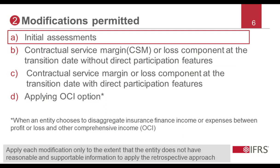The modifications specified in IFRS 17 provide relief from having past information needed to apply the full retrospective approach. That is, firstly, the assessments an entity would normally make at the date of inception of a contract or initial recognition of a group of contracts. Secondly, how to determine the contractual service margin or loss component of the liability for remaining coverage at the transition date. And thirdly, when an entity elects to disaggregate insurance finance income or expenses between profit and loss and other comprehensive income — the OCI option.